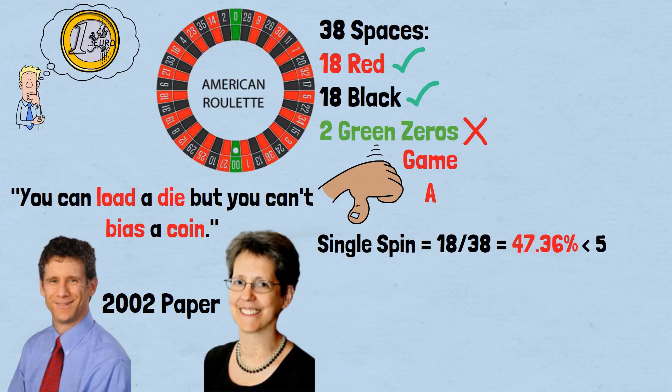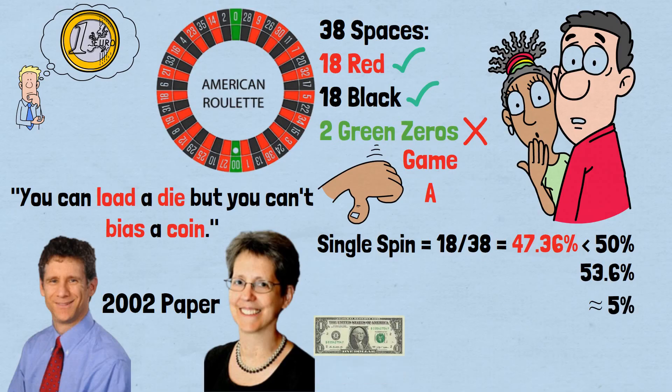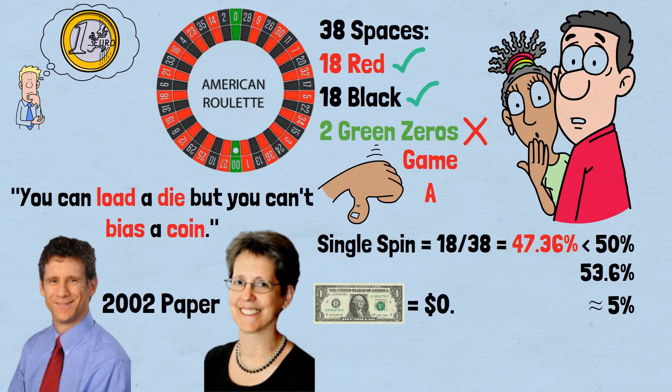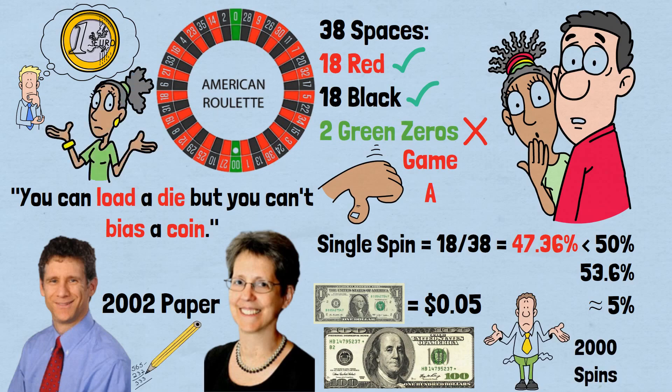Your odds of winning any single spin are 18 out of 38, which equals 47.36%—just slightly less than 50-50. But that small difference is mathematically devastating. With a 53.6% chance of losing each spin, the house edge works out to about 5%. This means theoretically, every time you bet $1 on Game A, you'll lose about 5 cents on average. Start with $100 and keep playing, and you'll be completely broke after roughly 2,000 spins. The math is relentless—Game A is a guaranteed long-term loser.